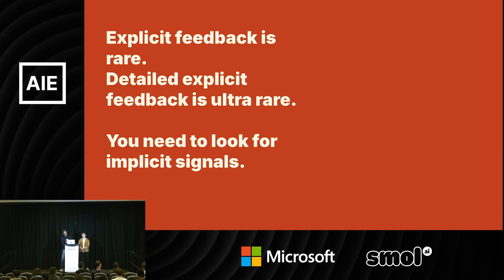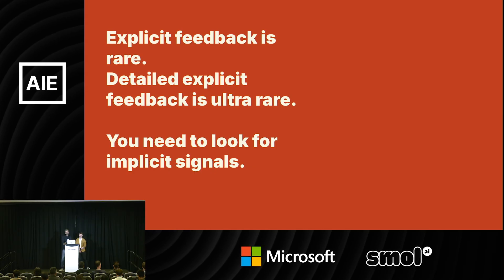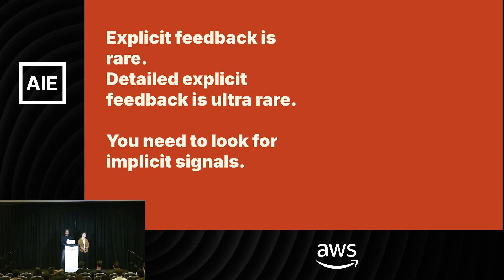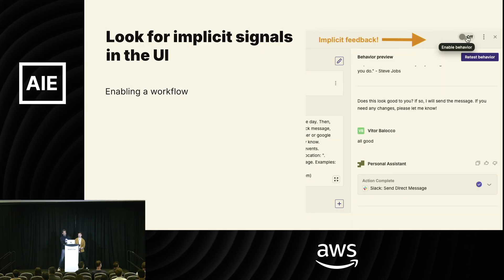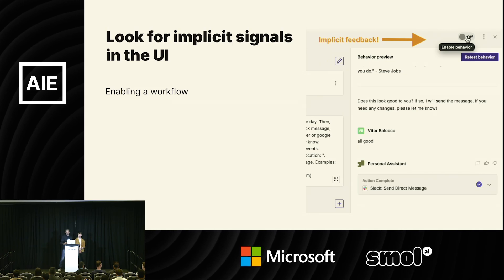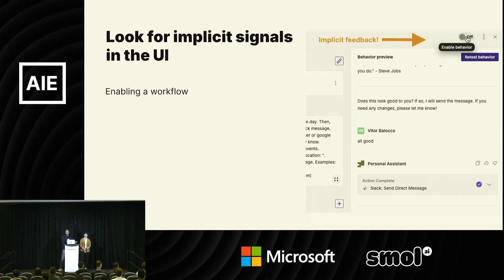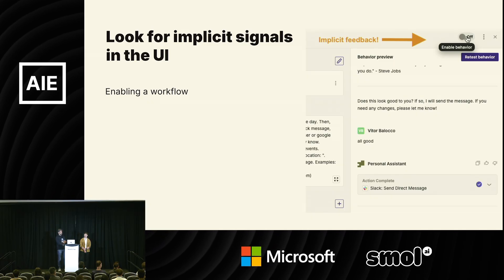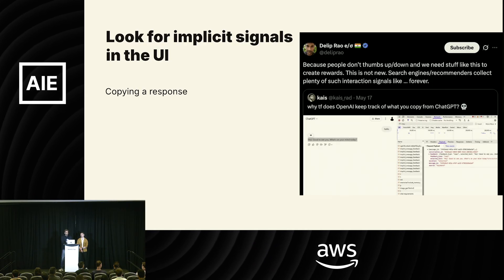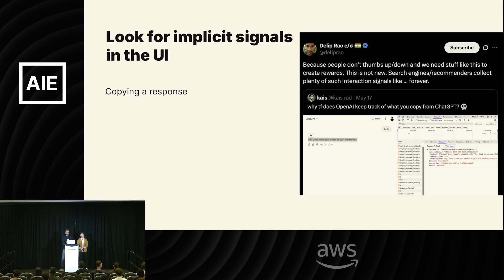Even if you work really hard for feedback, explicit feedback is still really rare. And explicit feedback that's detailed and actionable is even harder — people are just not that interested in providing feedback generally. So you also want to mine user interactions for implicit feedback. There's a lot of low-hanging fruit here. For example, if users test an agent and then turn it on, that's actually really strong positive implicit feedback. Copying a model's response is also good implicit feedback — even OpenAI does this for ChatGPT.